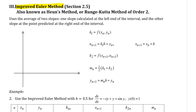In this method we're going to use the average of two slopes: one slope calculated at the left end of an interval and the other slope at the predicted point at the right end of the interval. Just like before, we've got a differential equation written in the form dy/dx equals some function of x and y, and we've got an initial point — in general we call that x-naught, y-naught. In our example here we're going to use (0, 1) again.